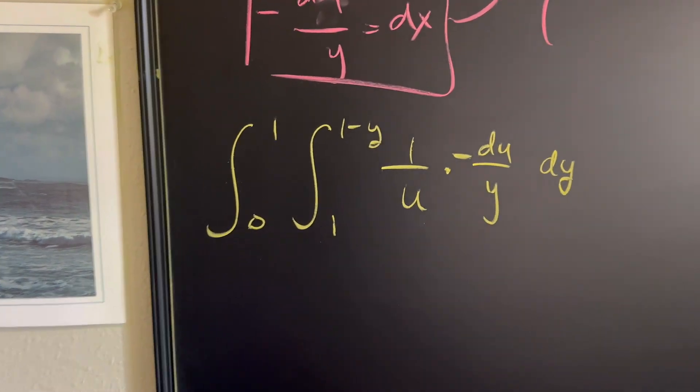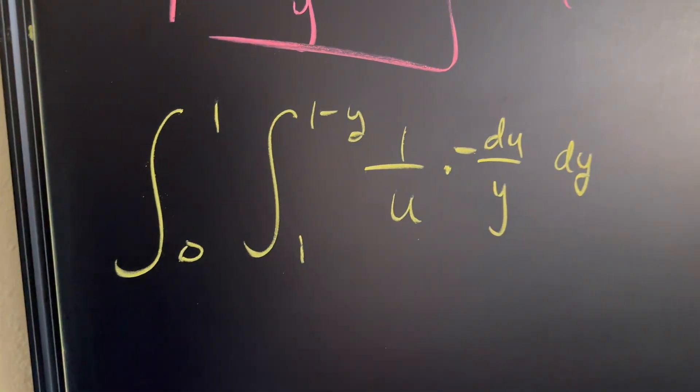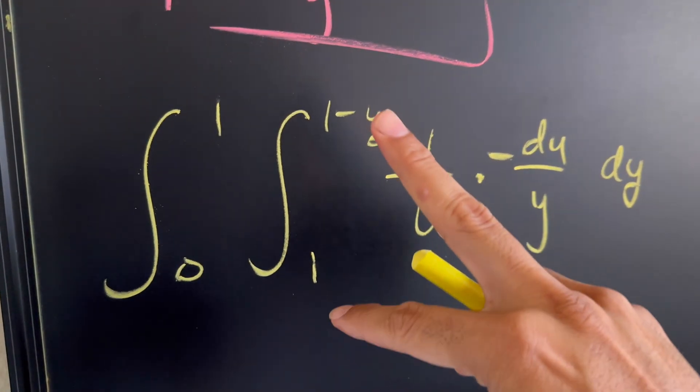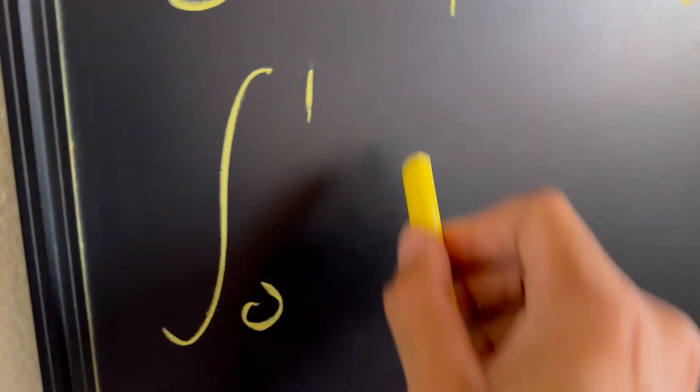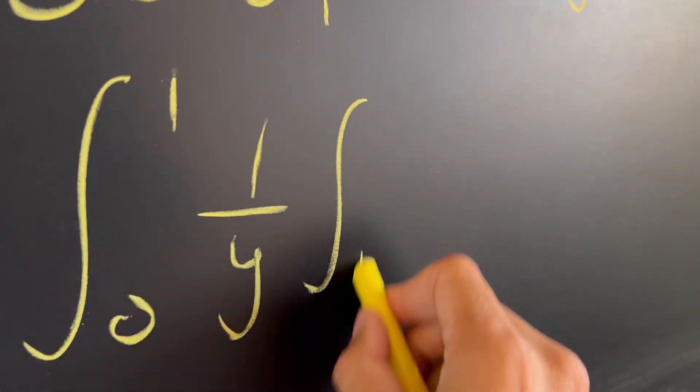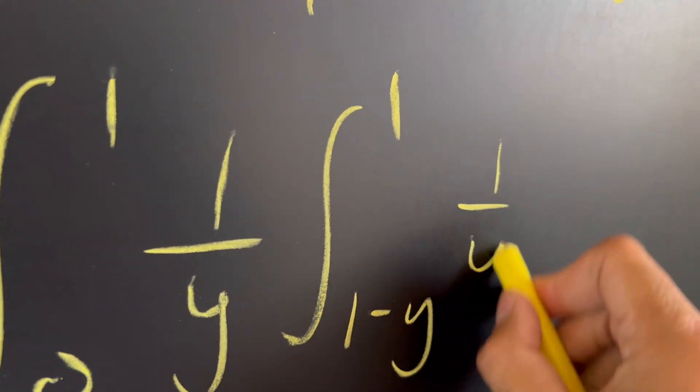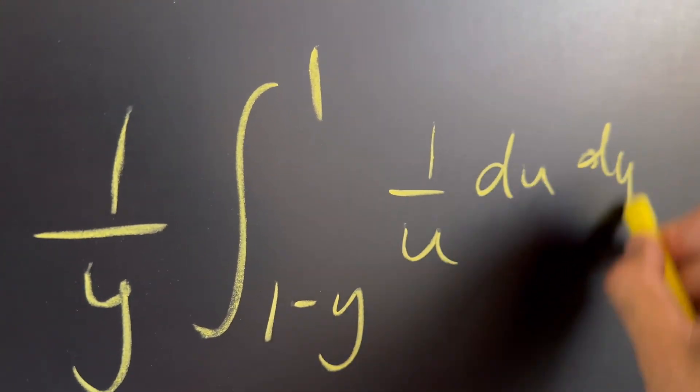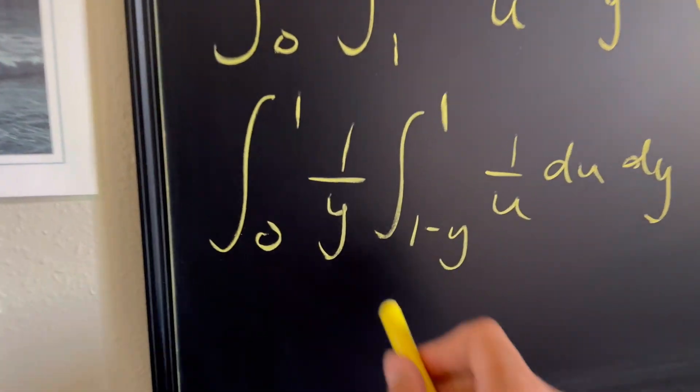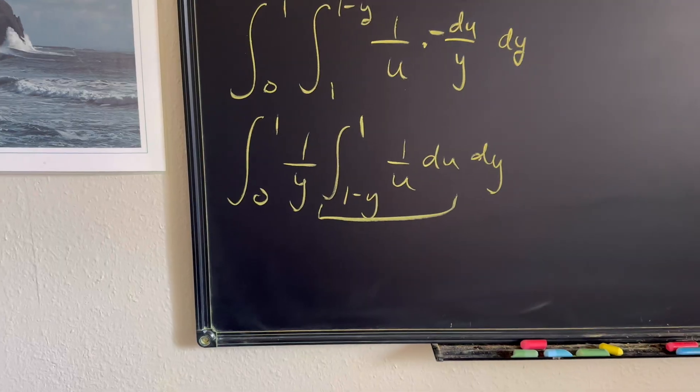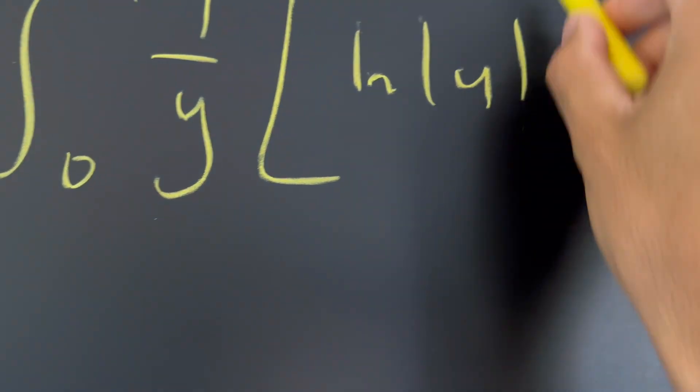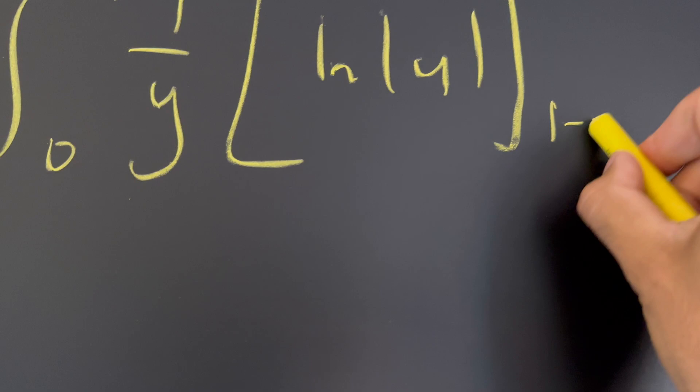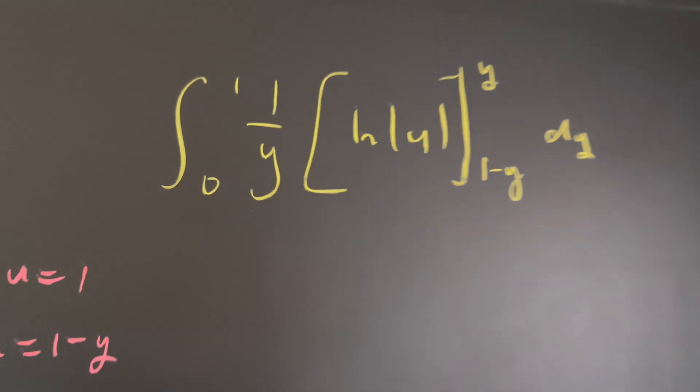As I mentioned, we're going to treat y as a constant, so we're actually going to move it on the outside, and we're going to use this negative to our advantage so we can flip these right here and nothing necessarily changes. So we have the integral from zero to one of one over y, and then we have integral from one minus y to one of one over u du, and then we still have the dy right there.